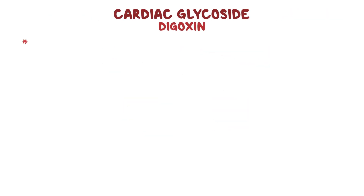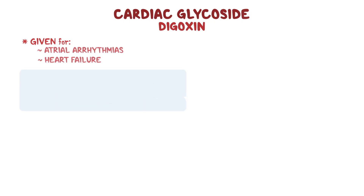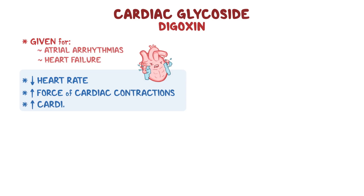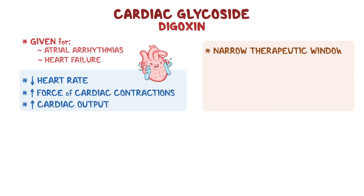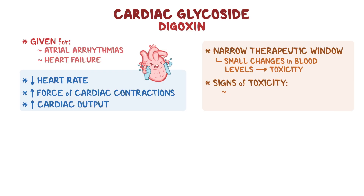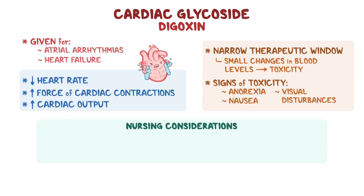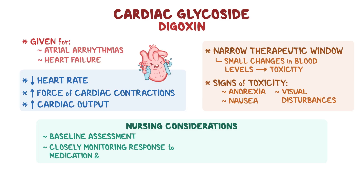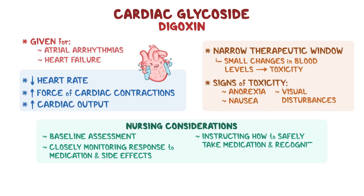As a quick recap, digoxin is a cardiac glycoside that is given for atrial arrhythmias and heart failure. Digoxin slows the heart rate, increases the force of cardiac contractions, and increases cardiac output. It has a narrow therapeutic window, which means that small changes in blood concentration can cause toxicity. Signs of toxicity include anorexia, nausea, and visual disturbances. When caring for a client receiving digoxin therapy, nursing considerations include performing a baseline assessment, closely monitoring the client's response to the medication and for possible side effects, as well as instructing the client how to safely take the medication and recognize the signs of toxicity.